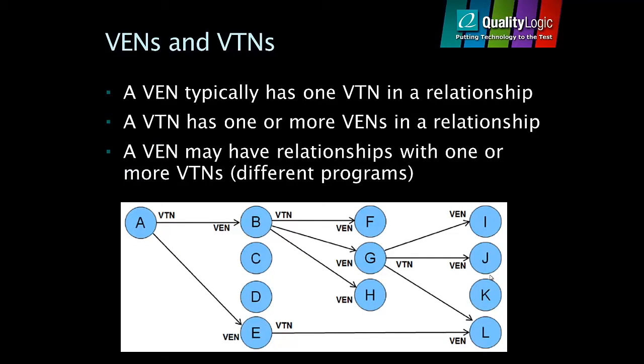Interactions between VTNs and VENs is a one-to-many relationship. As the diagram illustrates, a VTN may communicate with one or more parties playing the role of VENs, who in turn take on the role of the VTN to communicate with additional downstream resources playing the role of VENs.